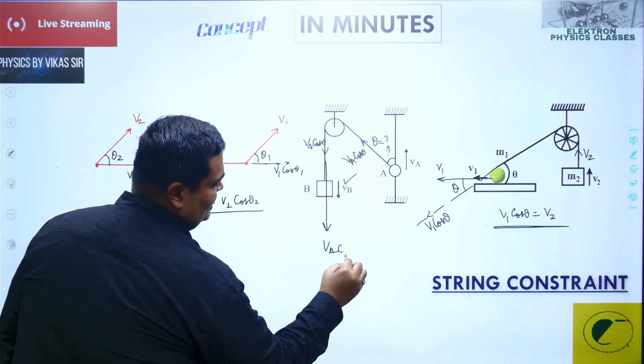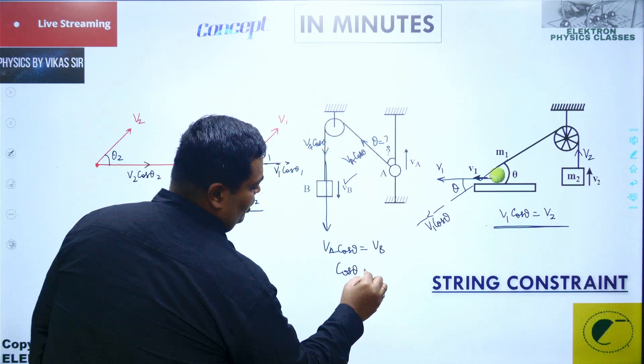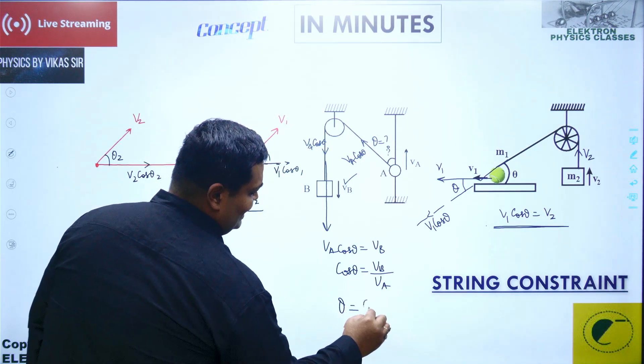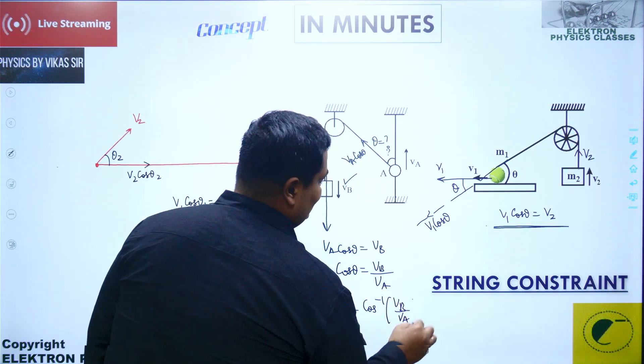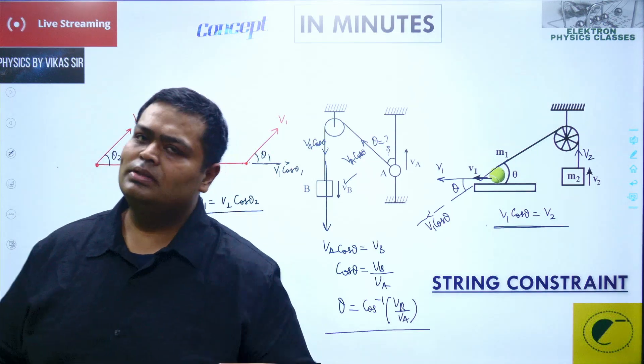So hence, v8 cos theta should be equal to vb. So therefore cos theta becomes equal to how much? vb upon v8. So you can write theta as cos inverse of vb upon v8. Thanks for watching this lecture. We'll be coming with such concept in minutes daily.